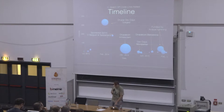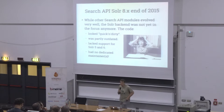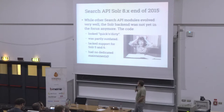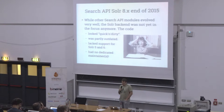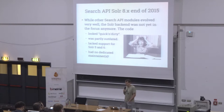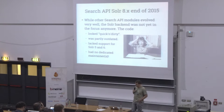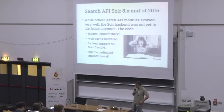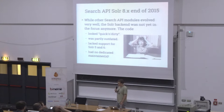As Nick already pointed out, while we had good progress in the other modules in the Search API ecosystem, Solr just somehow worked. If we look at the code at the end of 2015, it looked quick and dirty. Some parts were outdated and weren't updated with the development of Search API and Drupal 8 core. We didn't support the newer Solr versions 5 and 6, and we had no dedicated maintainer for the Solr backend — just a few people committing patches to keep it working.